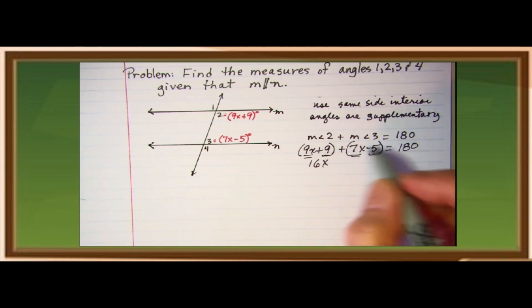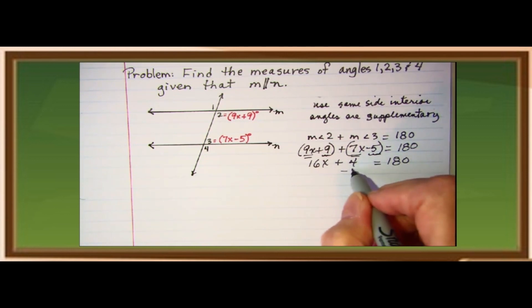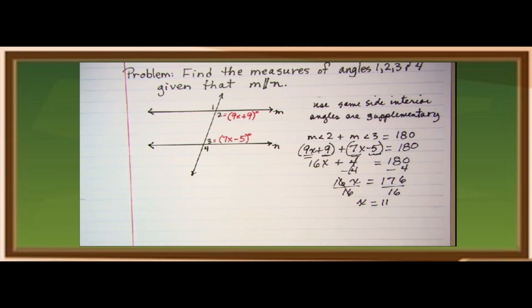Then, combine again 9 minus 5, that will give you 4 equals 180 degrees. Then, subtracting negative 4 in both sides, that will give you 16x equals 176. And, dividing both sides again by 16, that is x is equal to 11.